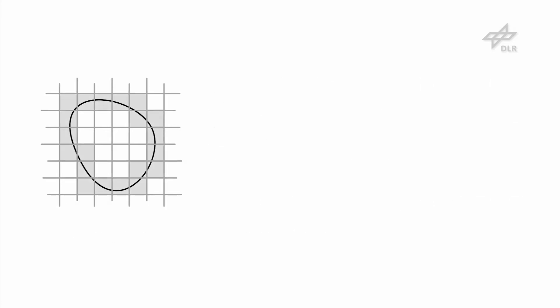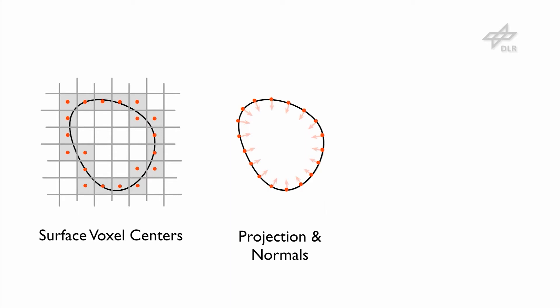In order to generate the point shell, the centers of the surface voxels are projected onto the object surface, optimizing their location for uniformity. Inwards pointing normals are computed for each point. Additionally, the points are clustered according to their relative distance and ordered into a tree. The parent point of each cluster is a child of the upper level.